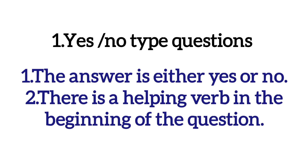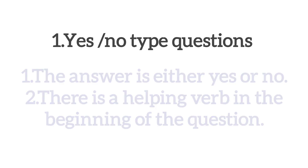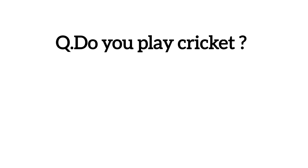Yes-no type questions — jaisa ki aapko is word se hi pata chal raha hai — yes-no type. Isme jo answers hote hain, ya to yes ho sakti hai ya no ho sakti hai, aur koi aur answer nahi ho sakti. Aur isme starting mein ek helping verb lagi hoti hai question ki starting mein. Jaise yeh question hai: do you play cricket? To aapko helping verb hai — do.